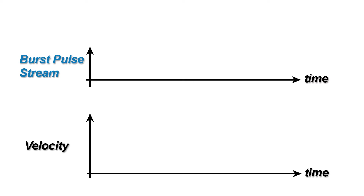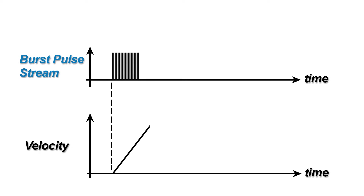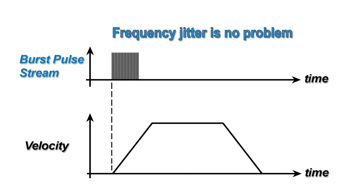With Pulse Burst Positioning mode, the step input can be driven by a digital output from a low-cost counter timer board, because ClearPath can automatically create a profiled motion trajectory from a fixed frequency burst of pulses, even if there's jitter in the frequency of the pulses.